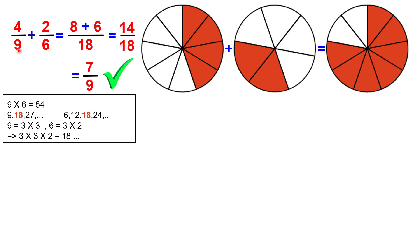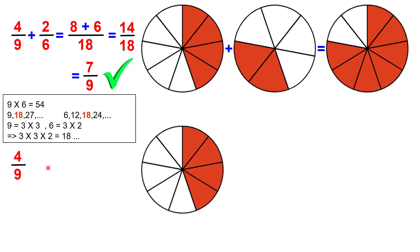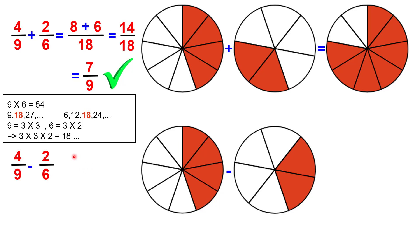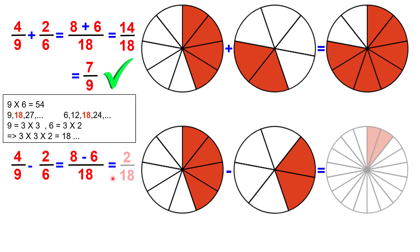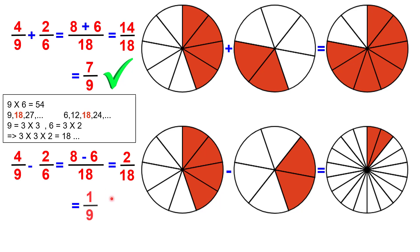Let's do the same with subtraction: 4 over 9 minus 2 over 6. We already know that the least common denominator is 18. So 18 divided by 9 equals 2, multiplied by 4 equals 8. And 18 divided by 6 equals 3, times 2 is 6. So 8 minus 6 is 2, giving us 2 over 18. And again, it must be simplified — dividing both by 2: 2 divided by 2 is 1, and 18 divided by 2 is 9. So we get 1 over 9.